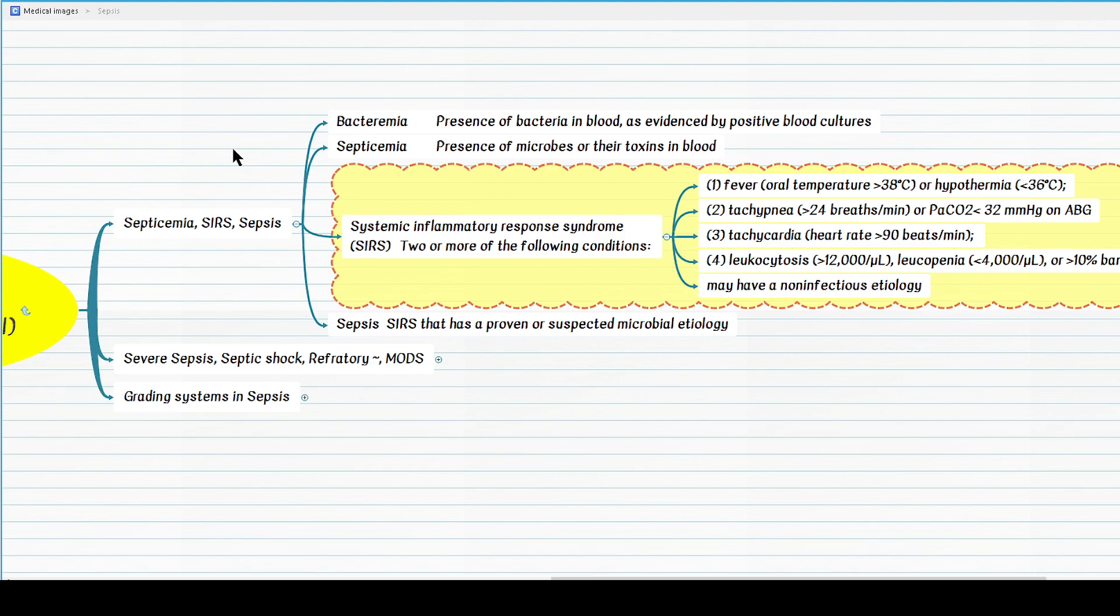Now, what are the respiratory criteria? Either tachypnea defined as respiratory rate greater than 24 breaths per minute or, please remember this one, PaCO2 in ABG assessment of less than 32 mmHg, regardless of respiratory rate.